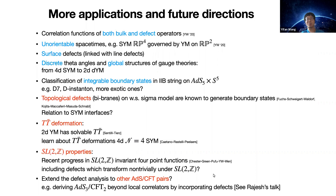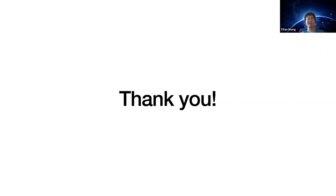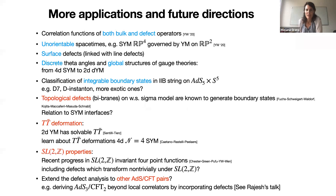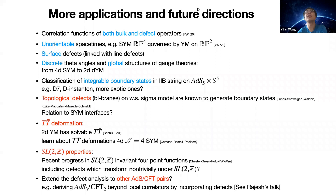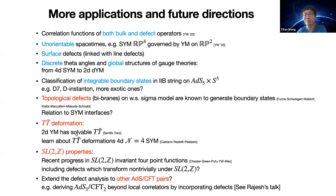Let's unmute ourselves for a few seconds to thank the speaker for the talk. There was a question by Martin Maldacena in the chat asking how you determine the normalization of the one-point functions, specifically the raw normalization of the boundary state. That's essentially related to this insertion in the matrix model — it's normalized by the two-point function.